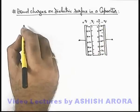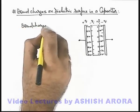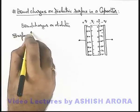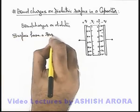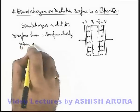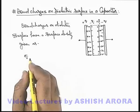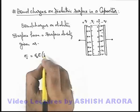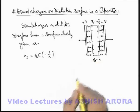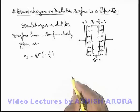In this situation we can say, which we already studied, the bound charges on the dielectric surface have a surface density. The surface density of bound charges, which we generally term as sigma induced, is given as epsilon-naught times E times (1 minus 1 by k), where k is the dielectric constant of this dielectric slab, and E is the external electric field which is polarizing the dipoles of the dielectric.